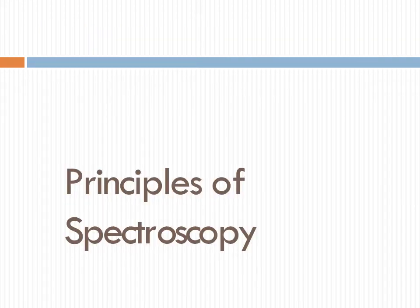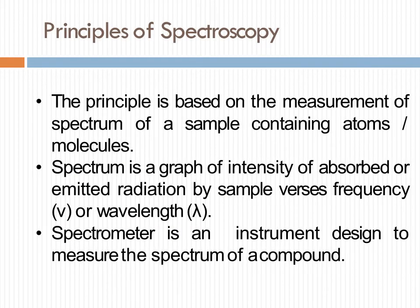Next topic is the principle of spectroscopy. The principle of spectroscopy is based on the measurement of the spectrum of a sample containing atoms or molecules. The spectrum is a graph of intensity of absorbed or emitted radiation by a sample versus frequency nu or wavelength lambda. A spectrometer is an instrument designed to measure the spectrum of a compound.